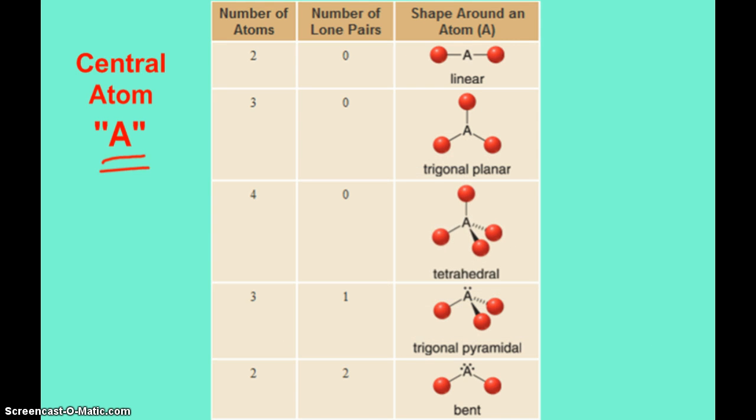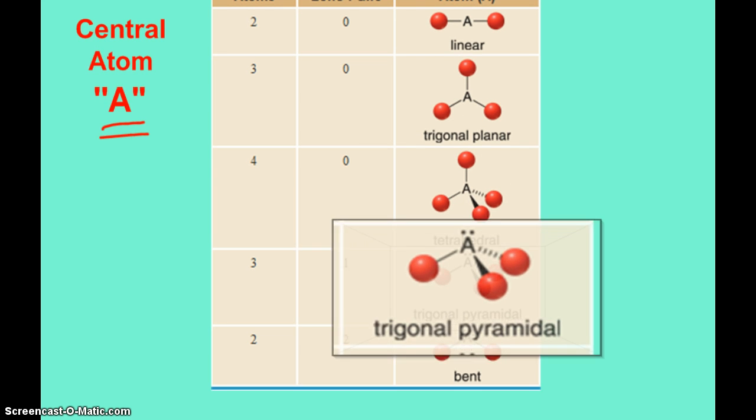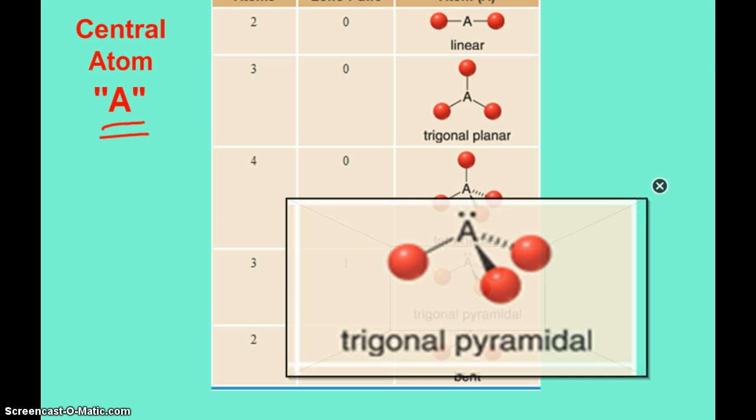Now, if we have three atoms and one lone pair around our central atom, even though there's three atoms, they won't be all on the same plane like our trigonal planar, because that lone pair will push those three atoms away from each other. And so we end up having a trigonal pyramidal situation. It kind of looks like one of those back scratchers with the wooden spheres at the end, and you can hold the one and scratch someone's back. That's kind of what it reminds me of, but that's trigonal pyramidal.